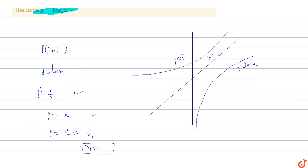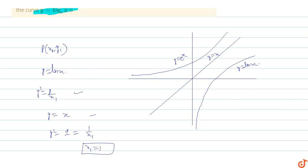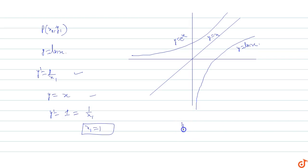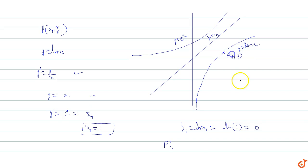Substituting x1 into y equals ln x: y1 equals ln(1) equals 0. So point P has coordinates x1 equals 1 and y1 equals 0. The point P is (1, 0).